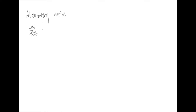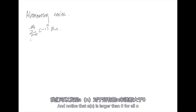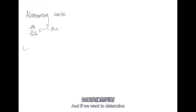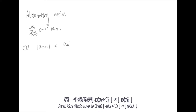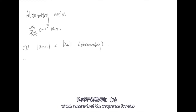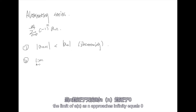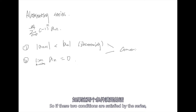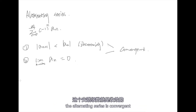First, we will talk about alternating series. Notice that a_n is larger than 0. And if we want to determine whether or not an alternating series is convergent, we have two conditions. The first one is that the absolute value of a_{n+1} should be smaller than the absolute value of a_n, which means that the sequence a_n is a decreasing sequence. The second condition is that the limit of a_n as n approaches infinity equals to 0. So if these two conditions are satisfied, the alternating series is convergent.